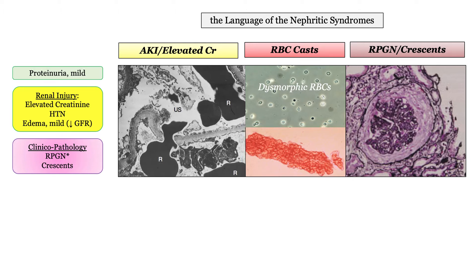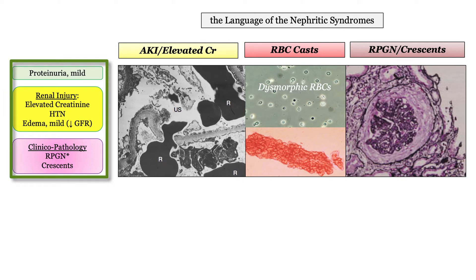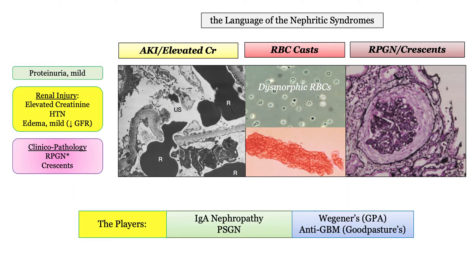A subset of patients with nephritic syndrome may develop a rapidly progressive form of the disease characterized by crescent formation with severe renal injury. The nephritic patient will be described with some degree of hypertension, edema, and/or proteinuria. In this presentation, we'll drill down on the information you'll need for the boards focusing on IgA nephropathy and post-streptococcal glomerulonephritis. In the next presentation, we'll tackle Wegener's and Goodpasture's.